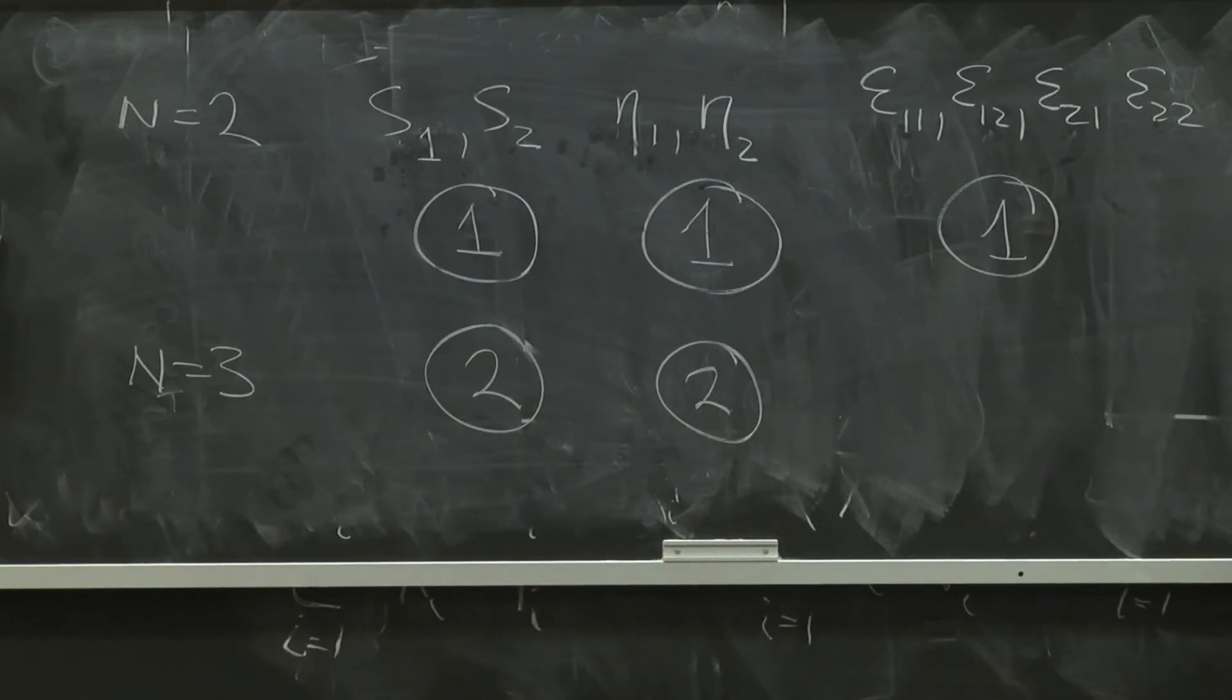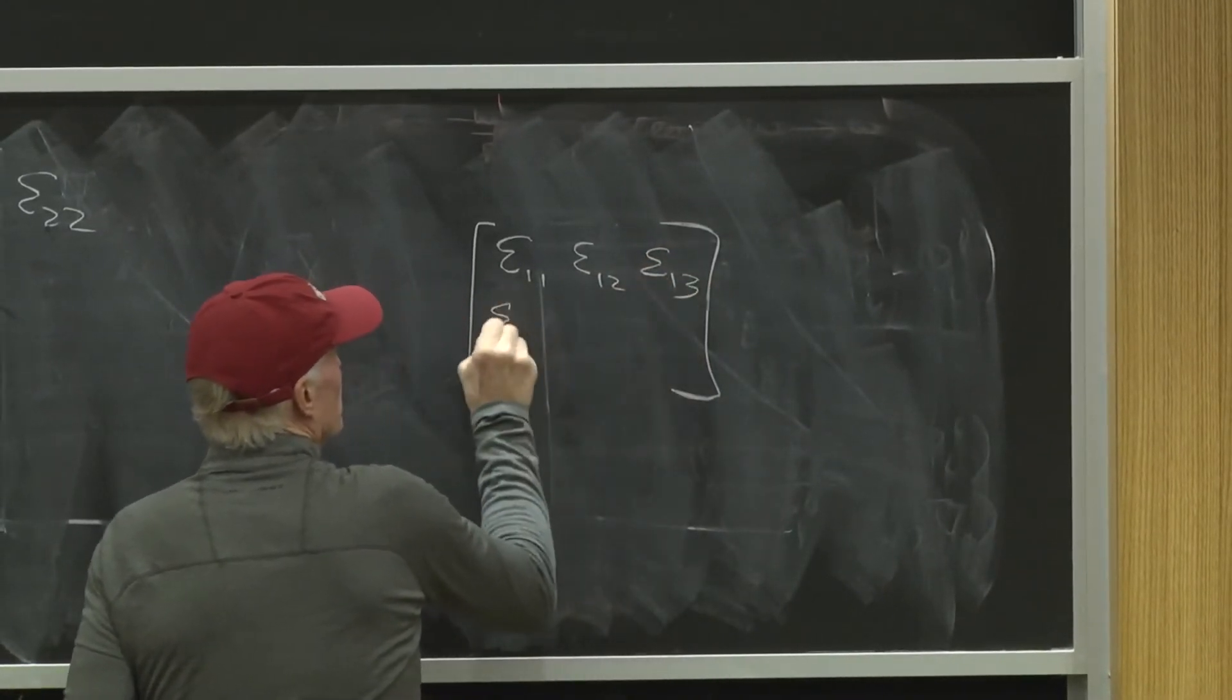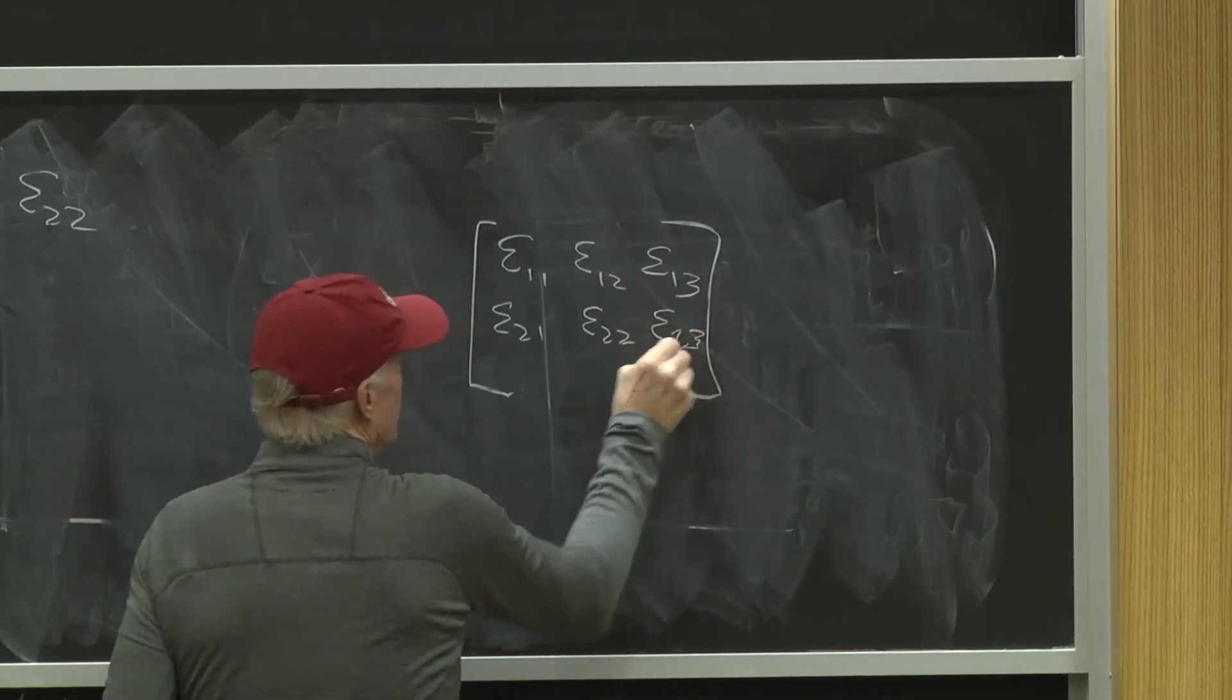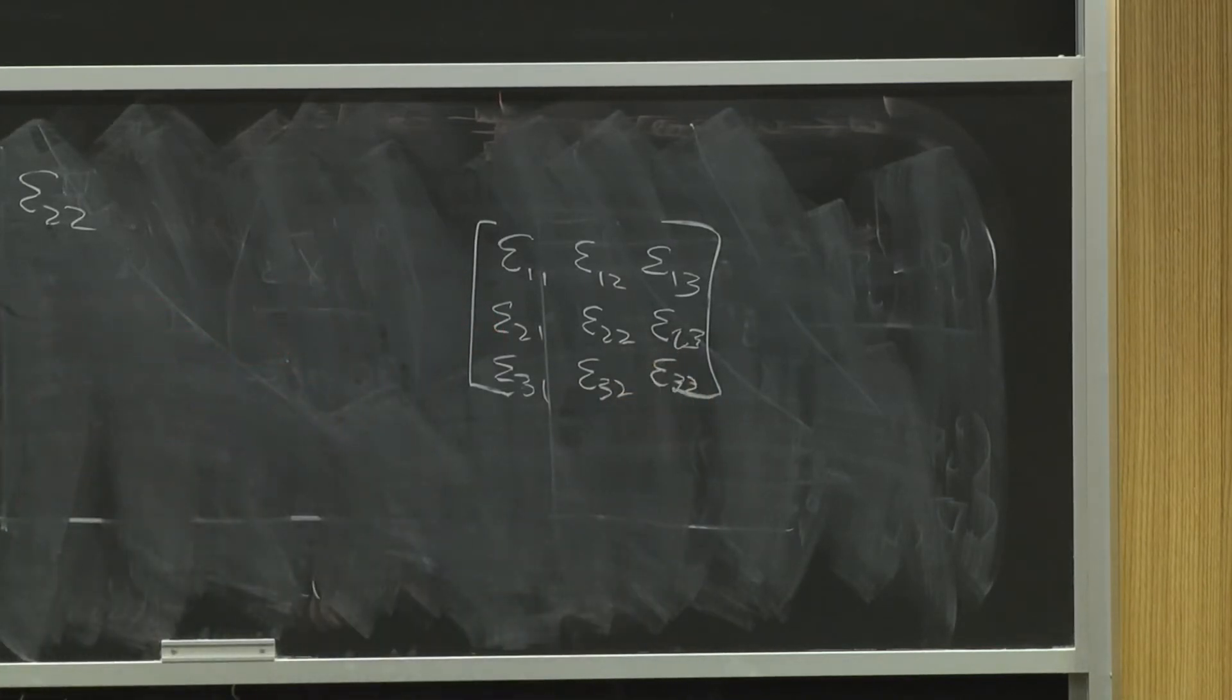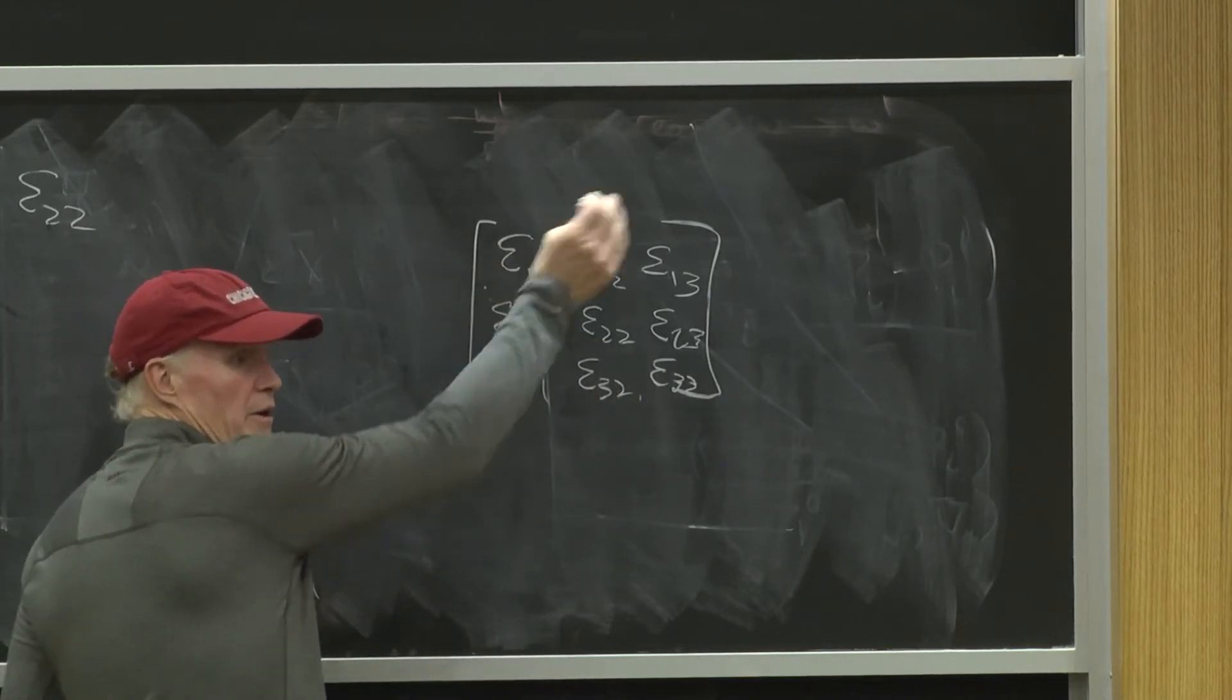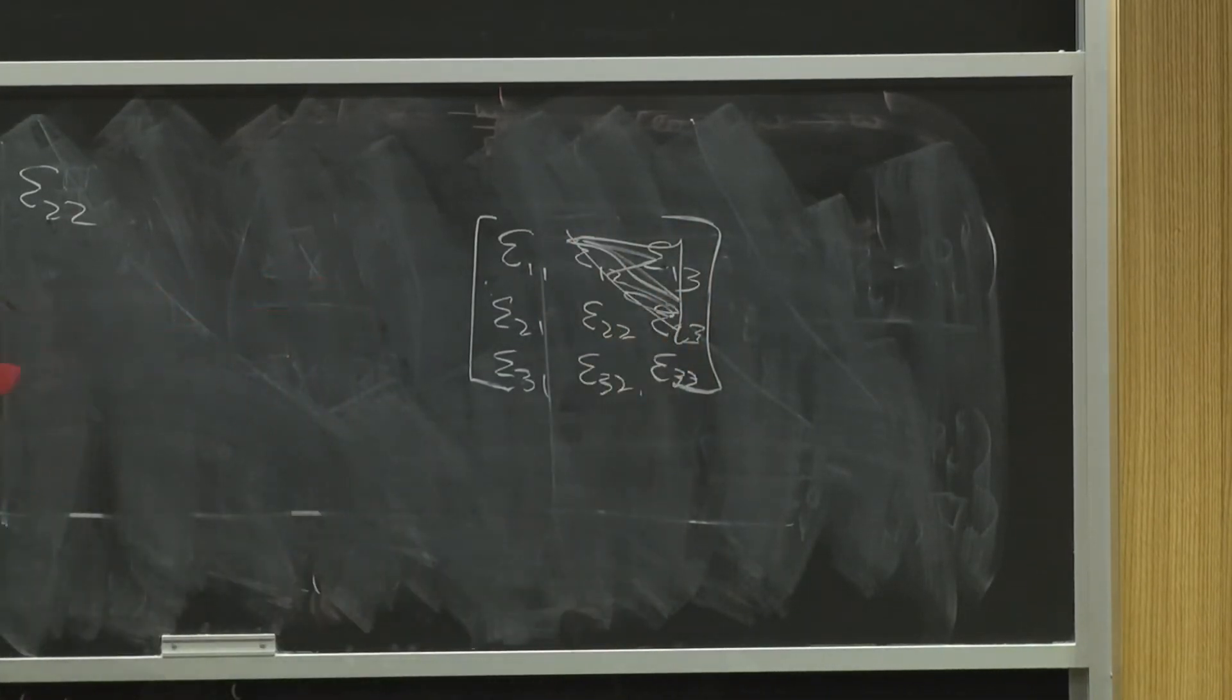And here it's easy to draw a picture. Think about my matrix, right? Epsilon 1,1, epsilon 1,2, epsilon 1,3, epsilon 2,1, epsilon 2,2, epsilon 2,3, epsilon 3,1, epsilon 3,2, epsilon 3,3. Got my 9 quote price elasticities. Symmetry will say basically if I know every number below the diagonal, I know every number above the diagonal so I can get rid of the top of the diagonal.